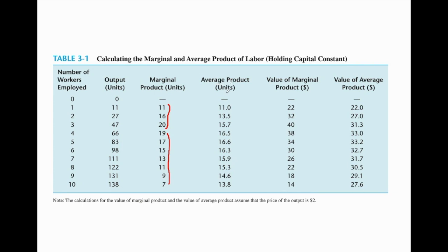The average product is also shown in the table. Average product is sometimes used as a simple measure of productivity because it shows the output produced per worker. The next column gives us the value of marginal product. This is a new concept. The notation is value of marginal product of worker, denoted VMP with subscript E.